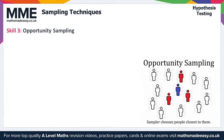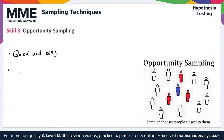Let's move on to skill three on opportunity sampling. Opportunity, or sometimes known as convenience sampling, is a sample based on what is convenient for the sampler. For example, it could be a survey handed out to friends and family of the sampler, because this is easier than contacting people they do not know. Opportunity sampling is a generally poor method — although it may be quick and easy, it is clearly biased, and no attempt to obtain a representative sample has been made.